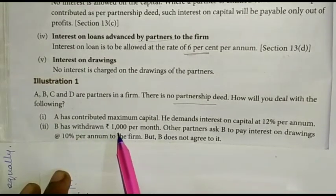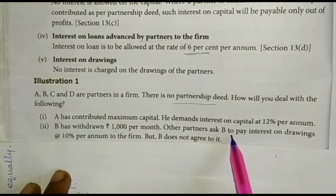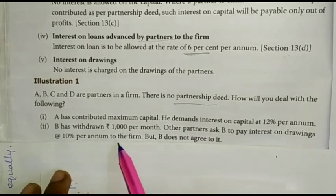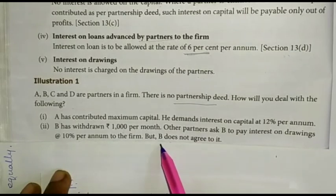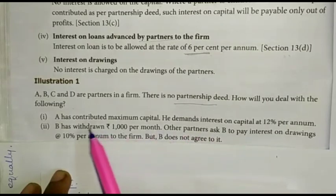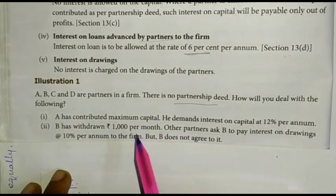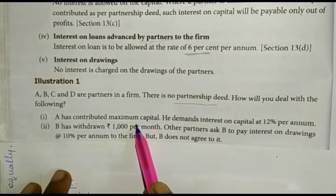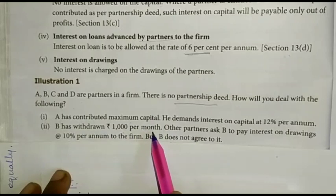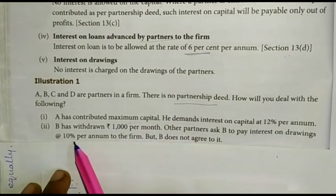Number 2: B has withdrawn Rs. 1,000 per month. Other partners ask B to pay interest on drawings at 10% per annum to the firm. But B does not agree to it.